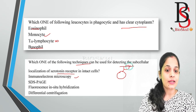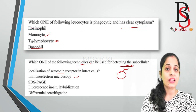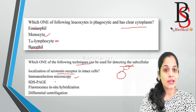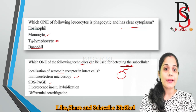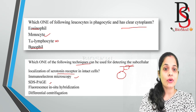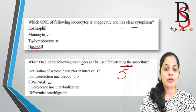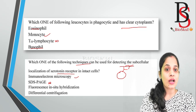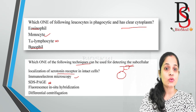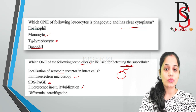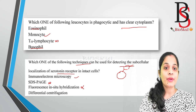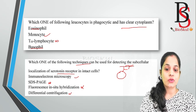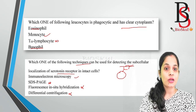By using an antibody to the receptor connected to the electron microscope, we can detect where the receptor is present. The second option, SDS-PAGE, is used to separate proteins based on their molecular weight — it is a type of electrophoresis technique. The third option, fluorescent in-situ hybridization (FISH), uses a fluorescent probe to localize or map genetic material, so it is not applicable here. Differential centrifugation separates cellular components by size or sedimentation rate — also wrong. The correct answer is immunoelectron microscopy.